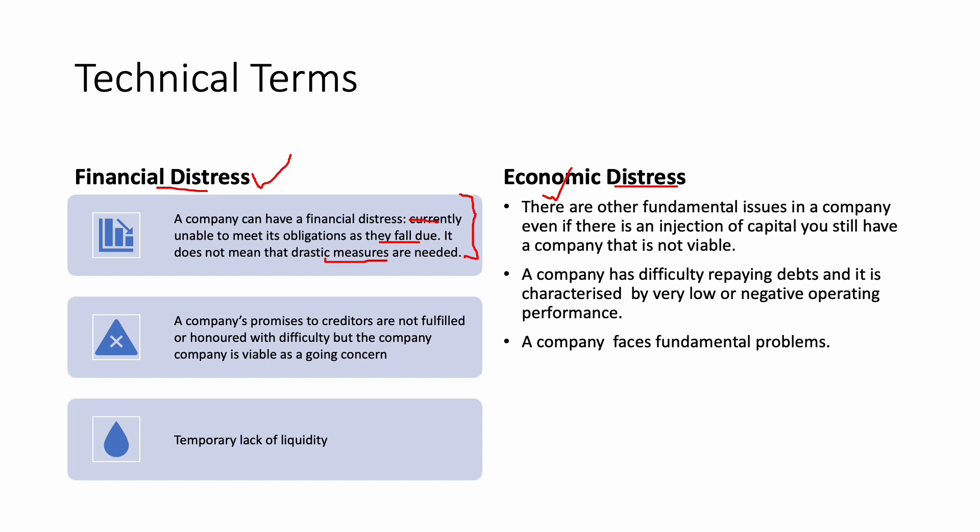On the other side, when we talk about economic distress, what we mean here is that a company is facing fundamental issues to the extent that even if you inject in more capital, you still have a company that is not viable. Get this distinction because the measures, procedures, and tactics you are going to use to help that particular company are different based on these two completely different situations.